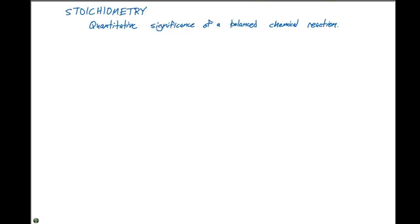In the stoichiometry section, we can investigate the quantitative significance of a balanced chemical reaction. This will allow us to determine the number of grams that need to react, and also the number of grams of a product that is produced in a chemical reaction.